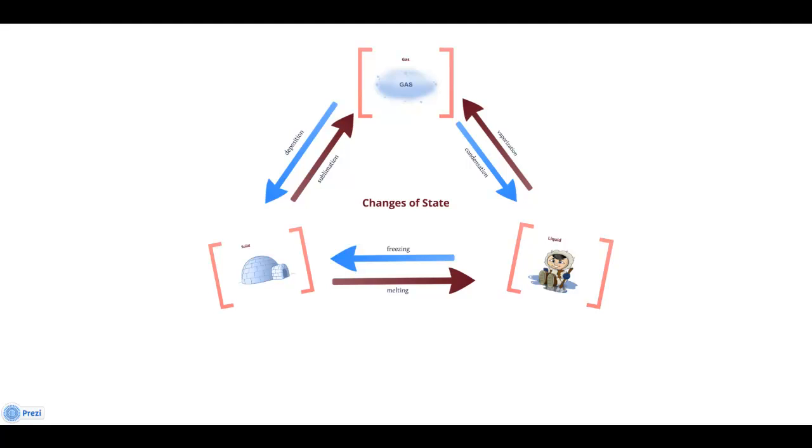The three basic states of matter are solid, liquid, and gas. The main differences between these states of matter are the closeness of the molecules and the energy of the molecules.